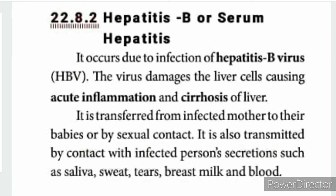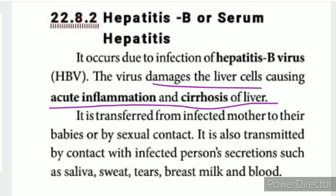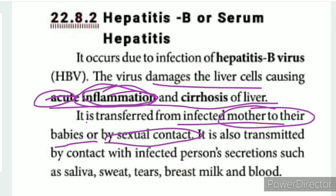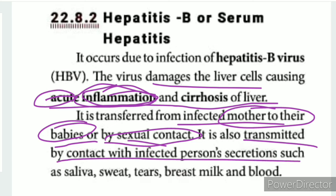The second disease is Hepatitis B, also known as serum hepatitis. It causes liver damage including acute inflammation and cirrhosis of the liver, leading to liver cell inflammation and weakness. It is transferred from an infected mother to their babies or through bisexual contact. It is also transmitted by contact with infected person's secretions including saliva, sweat, tears, breast milk, and blood.